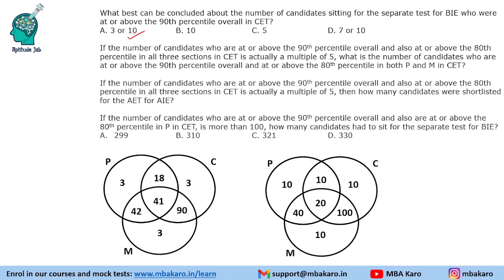Question 2: the number of candidates at or above the 90th percentile overall and also at or above the 80th percentile in all three sections is a multiple of five — so we use the A=10 case. We need to find candidates at or above 80th percentile in both P and M: looking at the overlapping region of P and M, that is 40 plus 20 equals 60.